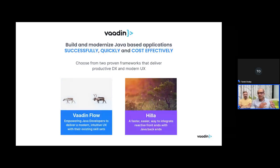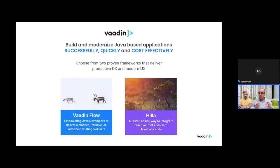The first framework is Vaadin Flow, which empowers Java developers to build web applications purely in Java without writing any HTML and JavaScript. The second framework, Hilla, is for teams that need to integrate a reactive TypeScript front-end with a Java backend. Whichever option your team chooses, you can get faster development and faster time to market while also delighting your users.